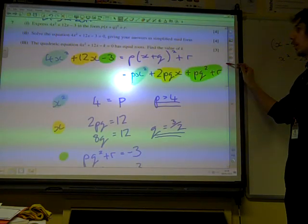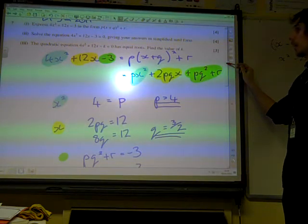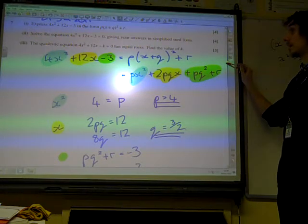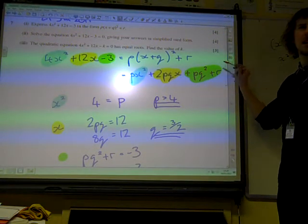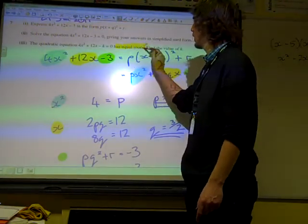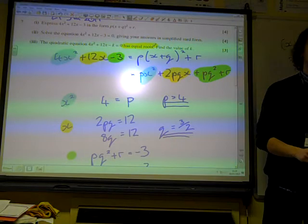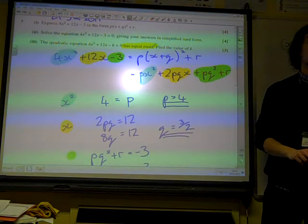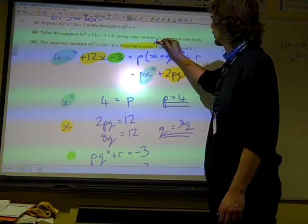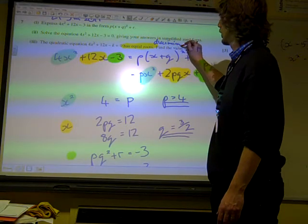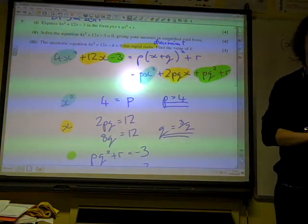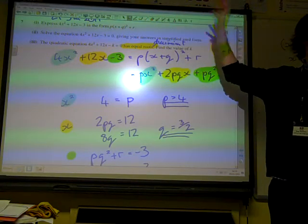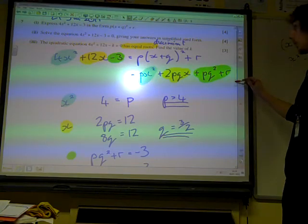What are we on now? The quadratic equation 4x squared plus 12x minus k equals 0 has equal roots. Find the value of k. So when we read this, as soon as we read that, what word does that bring to mind immediately? Discriminant. It tells us discriminant straight away. So as soon as we read that, we're thinking this is about the discriminant. There may be other ways of doing this because of what we've already done, but that seems like a very sensible way to start with this.